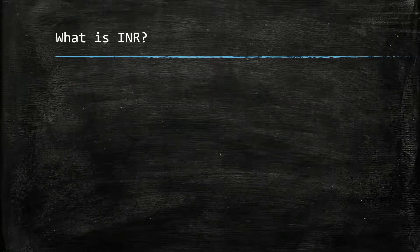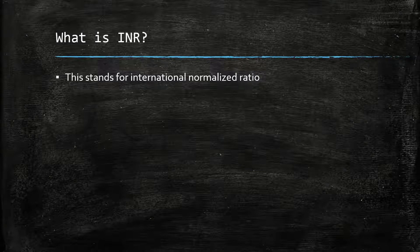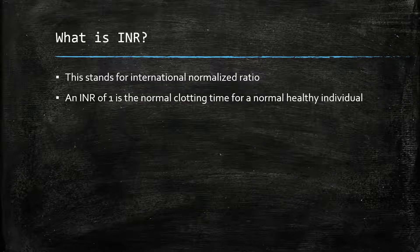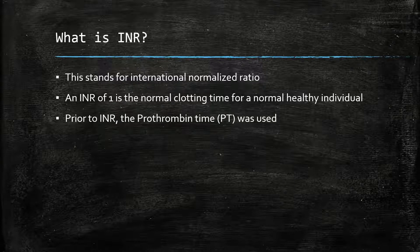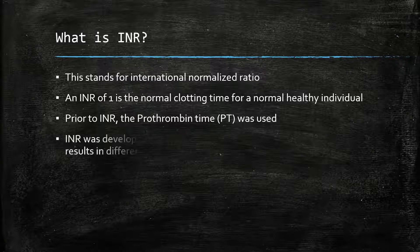So, what exactly is INR? This stands for the International Normalised Ratio. In a normal healthy individual, this equals 1. The INR was developed because there were discrepancies between different laboratories when processing the prothrombin time of a patient. It allows the comparison of the clotting state of an individual internationally.